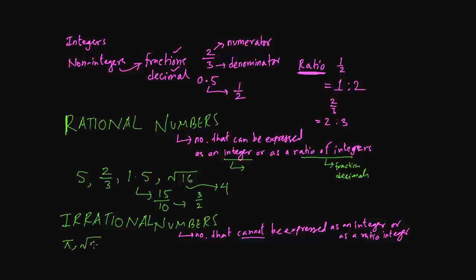Then square root of 2. Square root of 2 cannot be expressed as an integer. It cannot be expressed as a ratio of integers. It will be always square root of 2 and it will be 1.41 something something something and same with square root of 3 and on. So remember, these numbers of square roots and PI, these are irrational numbers. Numbers that cannot be expressed as integers or ratio of integers.